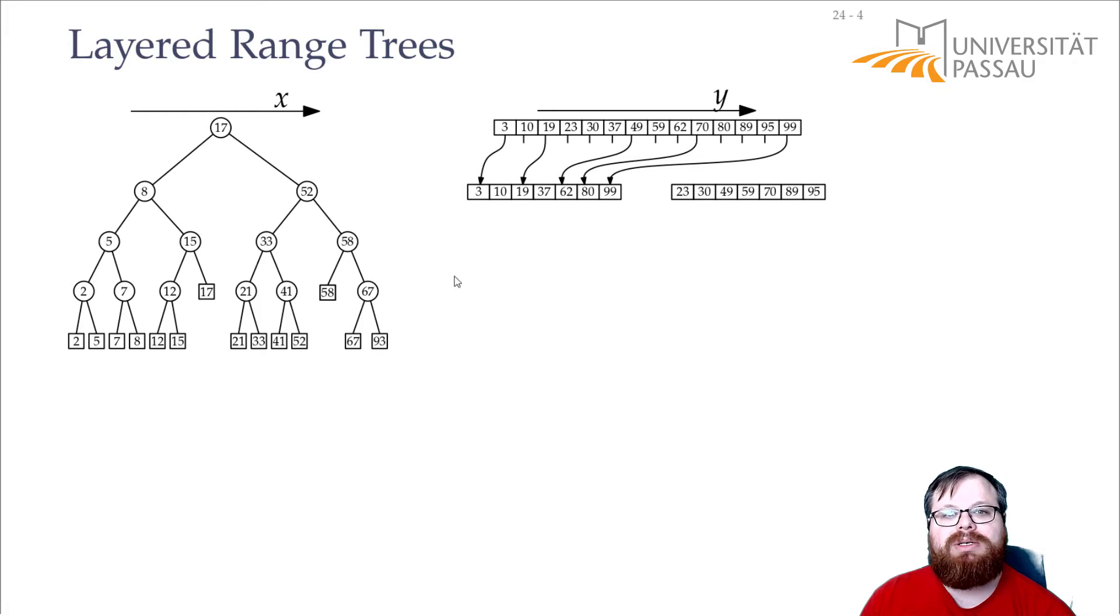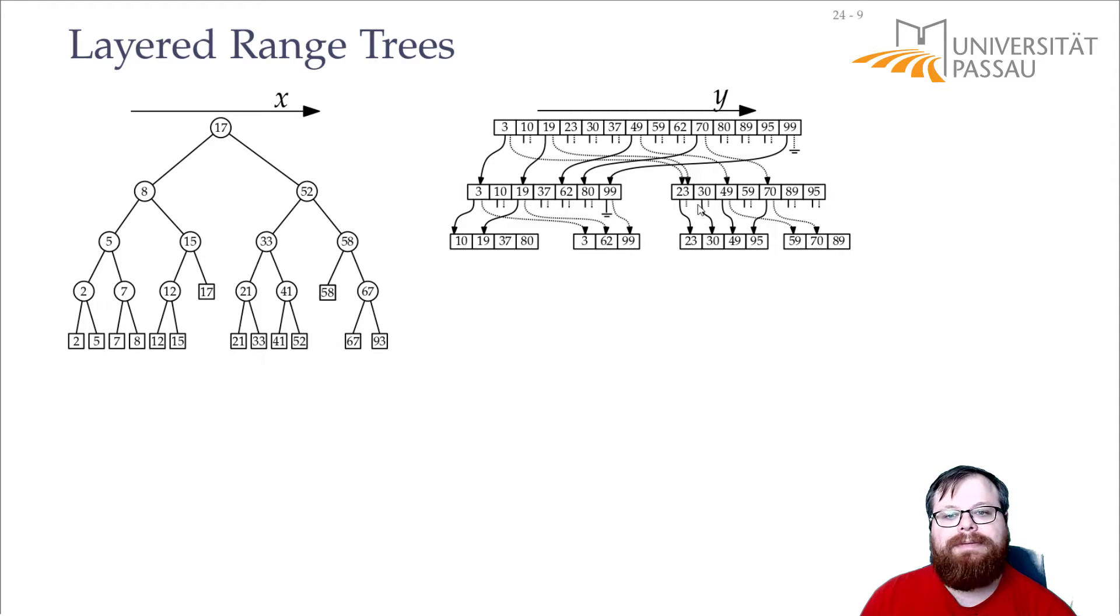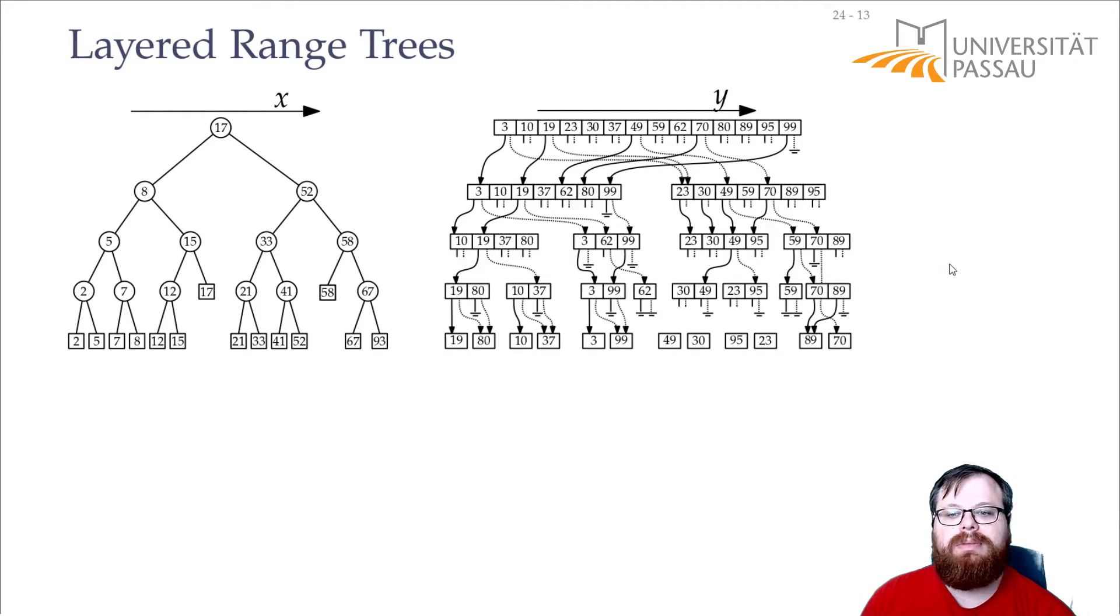And then, we add these pointers, as we just defined in task 1, to these second levels. And that we do in every step. So, instead of creating trees here, we take these arrays. And we also store the pointers. And now, here you see we have two pointers. We have one pointer that goes to the 3 in this array. And one pointer that goes to the smallest element that's larger, the 23, in this array. So, every element here gets two pointers to the next two layers. And then, this is how the whole data structure looks like.